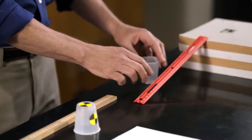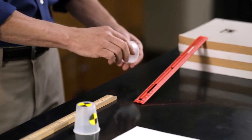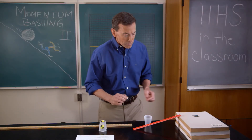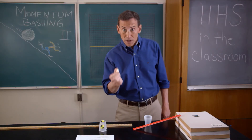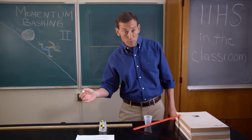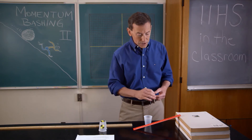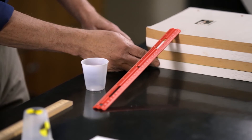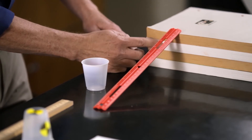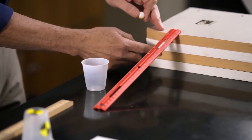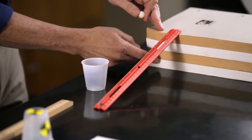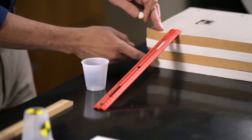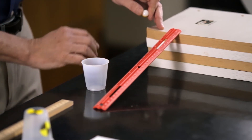You have your ruler with a groove in it. Now, you're using just one marble, but you have to increase this marble's velocity to see how it's going to affect the momentum. To do that, ideally you want to increase the height each time by the same amount. So if you see here, I've got four books, all of pretty much equal thickness. So this would be, for instance, my fourth trial.